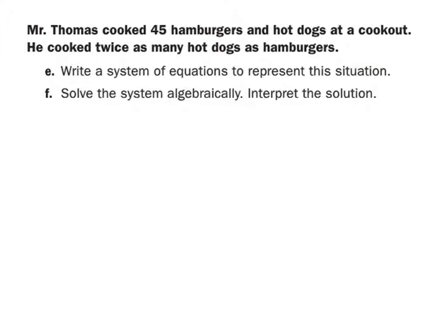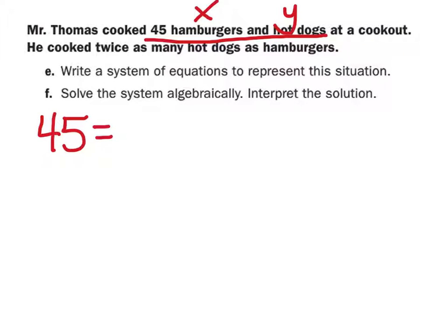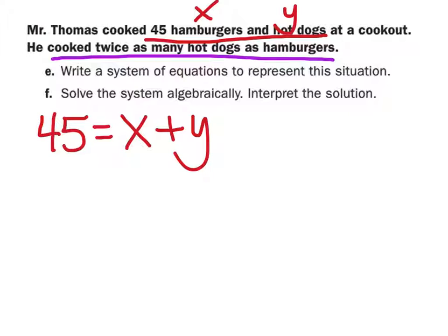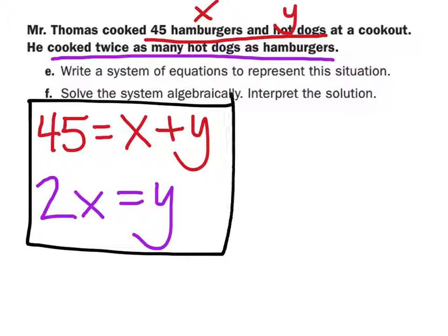Mr. Thomas cooked 45 hamburgers and hot dogs. Hamburgers will be x and hot dogs will be y. So x plus y equals 45. There are twice as many hot dogs as hamburgers, so y equals 2x. Now you just need to solve this system using either method you choose.